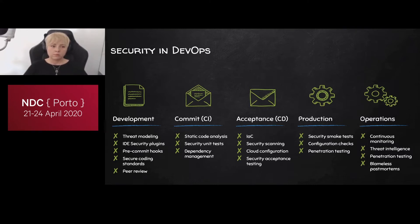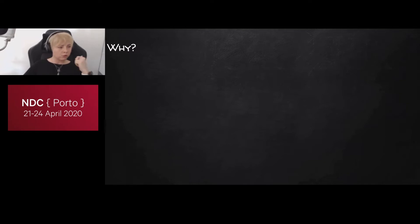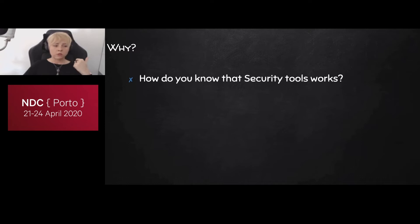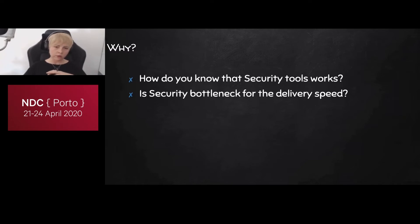You might say: we're doing these practices, so we do DevSecOps — we're fine, we're secure, why should we worry? But when the question is, why should you measure at all? Maybe everything works as needed. Consider: how do you know that the security tools you've implemented in your development lifecycle work at all? Are they efficient enough? Another issue is security becoming a bottleneck for delivery speed — teams introduce a security check that slows down development, then switch it off, saying security is the bottleneck. But is it really?